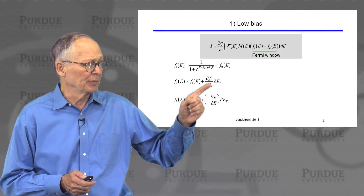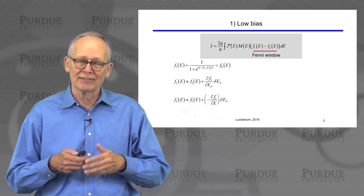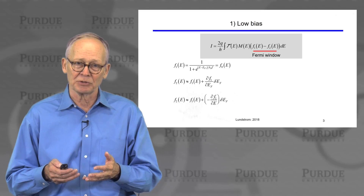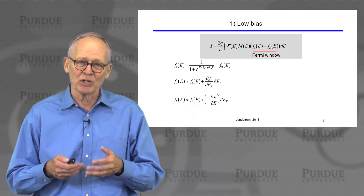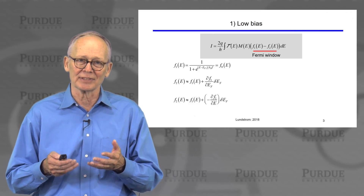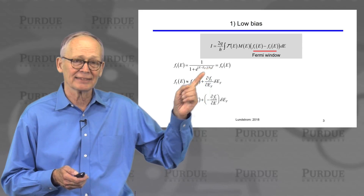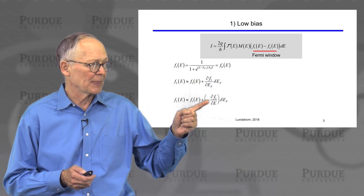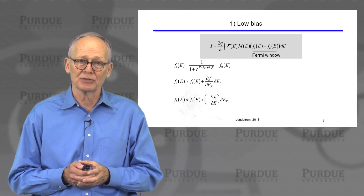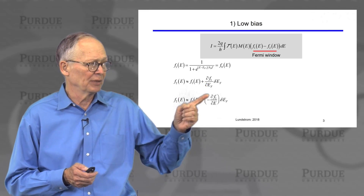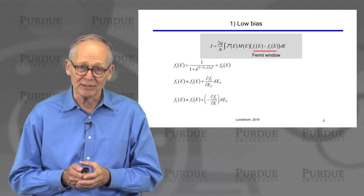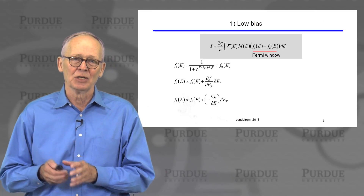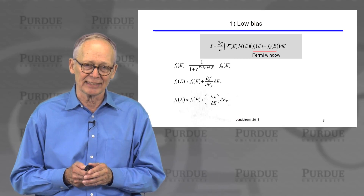If you look at the Fermi function, differentiating with respect to energy or with respect to the Fermi level gives the same result except for a sign, because there's a minus sign in front of the Fermi level. So I can replace the derivative with respect to the Fermi level by a derivative with respect to energy with a minus sign. That will be more convenient for working out the integrals we'll see in the next lecture.